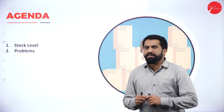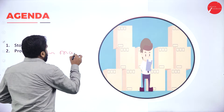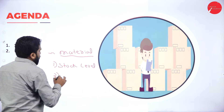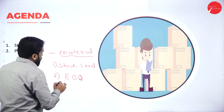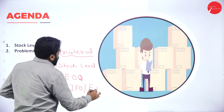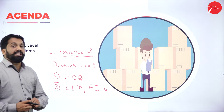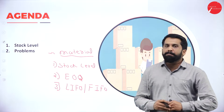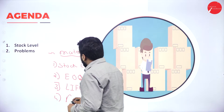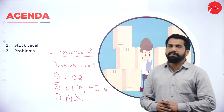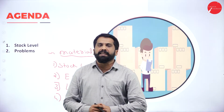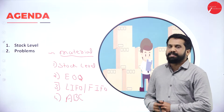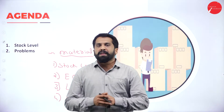First we will understand what stock level is, then we will do problems on stock level. In the material chapter, you have topics like: one, stock level; two, EOQ; and three, LIFO as well as FIFO. LIFO stands for last in first out and FIFO stands for first in first out. One more topic is ABC analysis — we'll do one problem on ABC for the safer side.